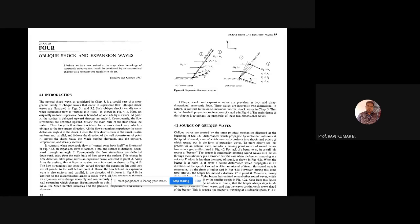The supersonic flow approaching a concave corner turns into itself, and the flow direction gets deflected with respect to the free stream direction. The free stream direction is horizontal, and correspondingly the flow is getting deflected by an angle theta — the flow deflection angle. Just behind the shock wave, the Mach number will decrease; the flow will still be supersonic but speed will be lesser than the upstream Mach number, so M2 is less than M1 but still supersonic.